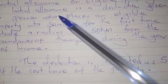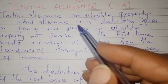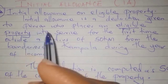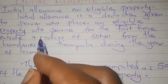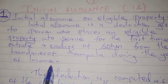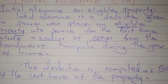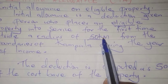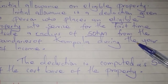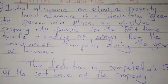Initial allowance on eligible property is the deduction given to a person who places an eligible property into service for the first time outside the radius of 50 kilometers from the boundaries of Kampala during the year of income. If you place eligible property outside a radius of 50 kilometers away from Kampala — in places like Masaka, Arua, Lira, Soroti — those places far from Kampala qualify for initial allowance.